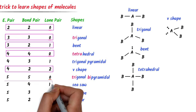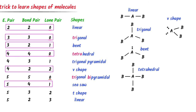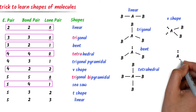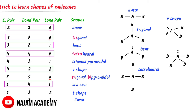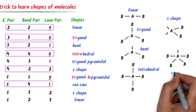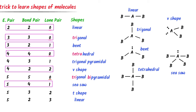Last case: central atom A with four bond pairs and one lone pair — its shape is seesaw. Therefore, using this trick, we can easily memorize the shapes of molecules and draw their geometry.